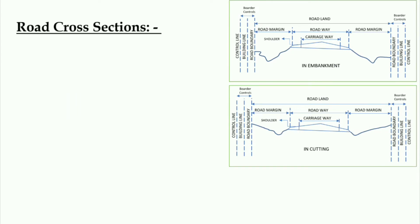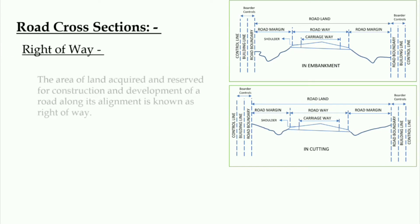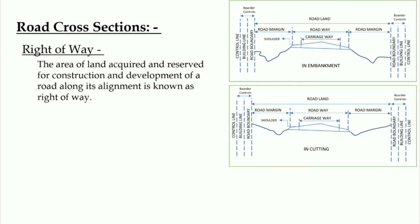First is right of way. The area of land that is acquired and reserved for the construction and development of a road along its alignment is known as right of way.